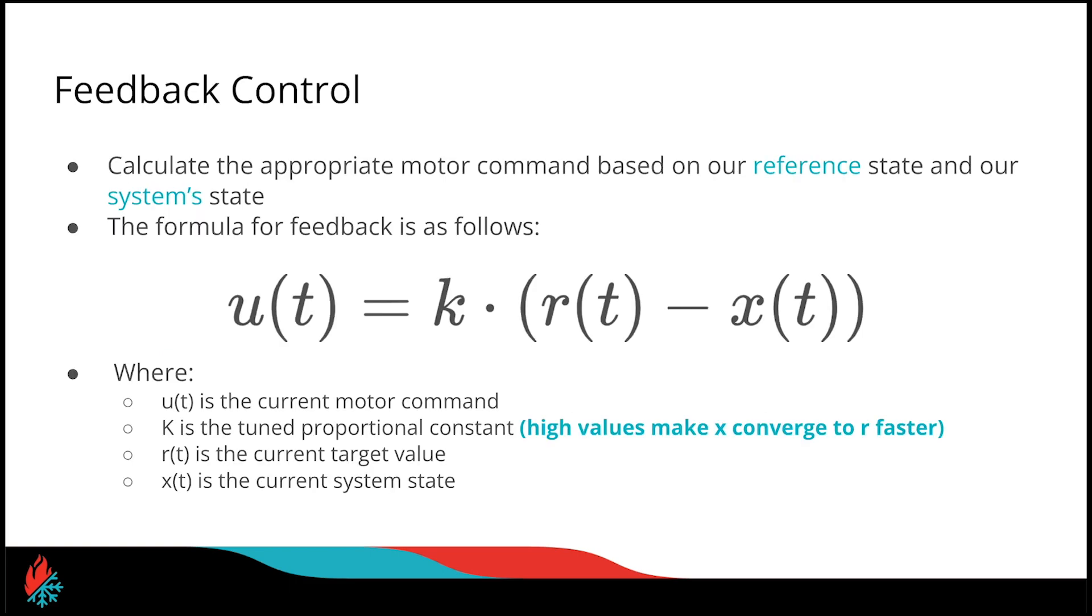Jumping straight into feedback control, this allows us to calculate an appropriate motor command based on our reference state and our system's measured state. The formula for feedback control is pretty simple. The current motor input u is equal to our proportional constant k times the current reference r minus the current system state x.